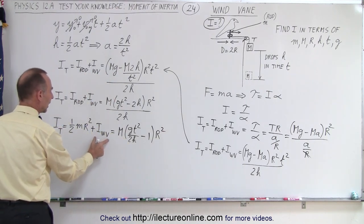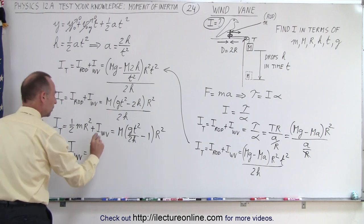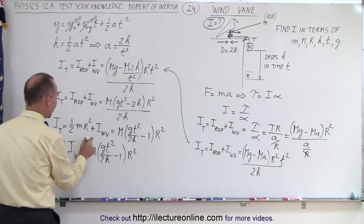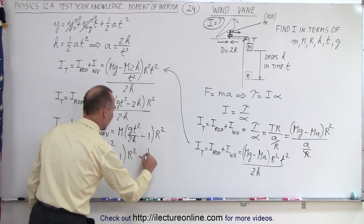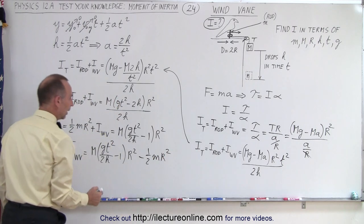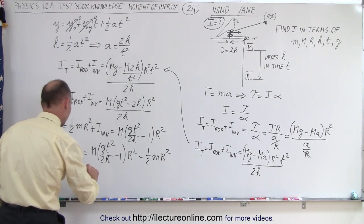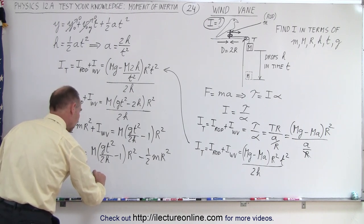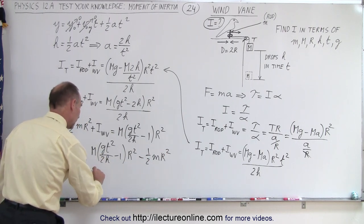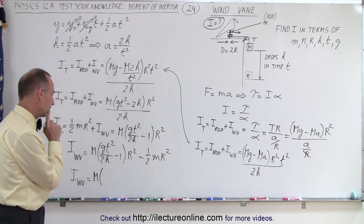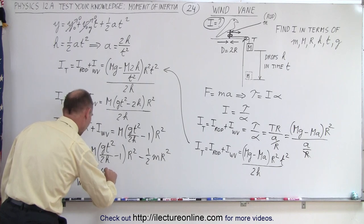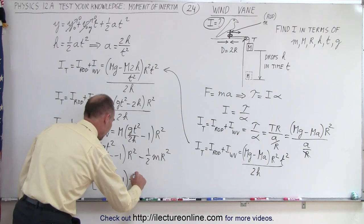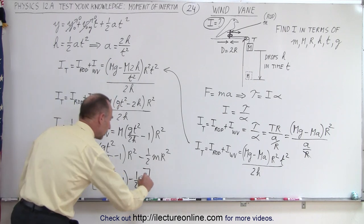Finally, to find I_wind_vane, that's going to be M times (g t squared over 2h minus 1) times r squared, and from that we subtract I_rod, which is one-half m r squared. We can factor out r squared, so I_wind_vane equals r squared times M times (g t squared over 2h minus 1) minus one-half m.